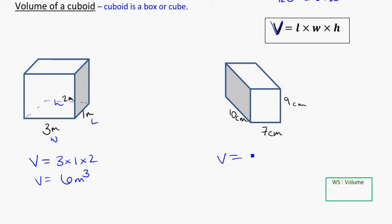For the next shape, volume, same idea. Just look for a length, a width, and a height. Timesing them together, 10 times 7 times 9. 7 times 9 is 63, times 10 is 630 centimeters. Again, cubed will be my volume.